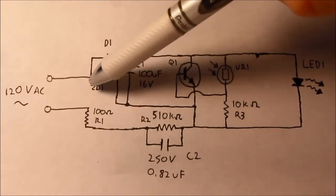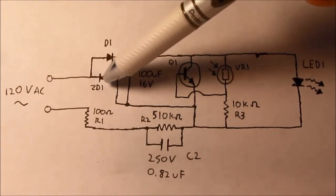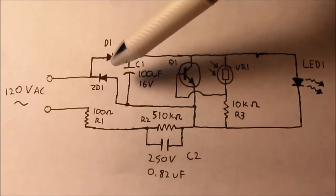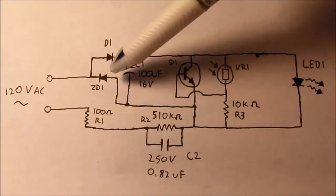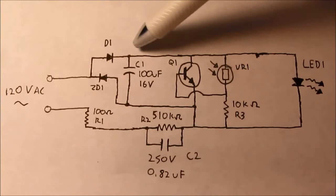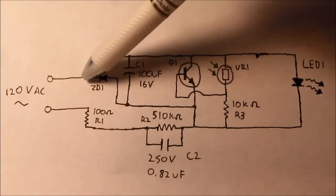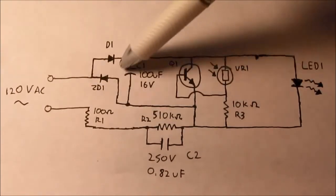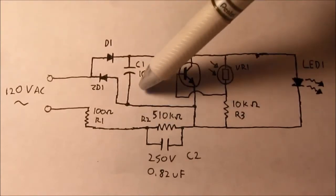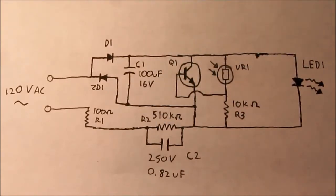Voltage is kept in check by ZD1, which I'm assuming from its part number is a Zener diode. It's a bit weird that it's connected to this side of the rectifier and not directly in parallel with the filter cap, but apparently that works just fine.